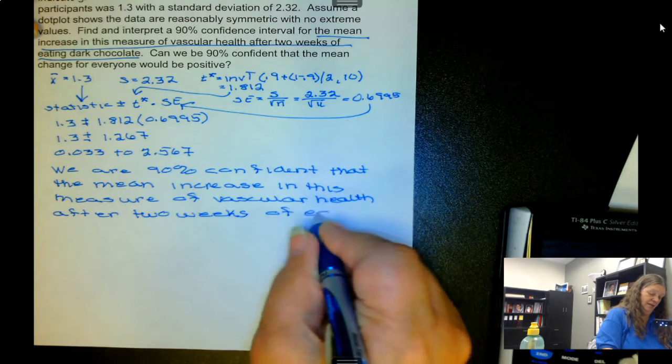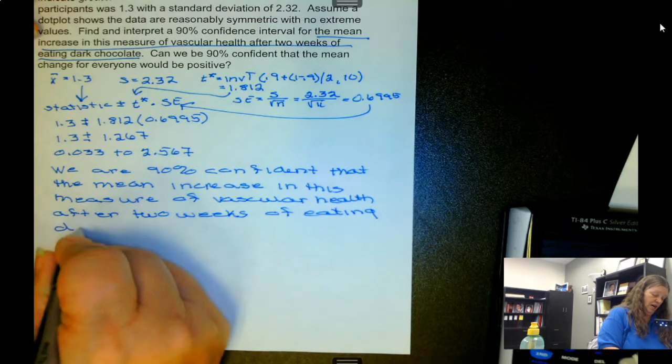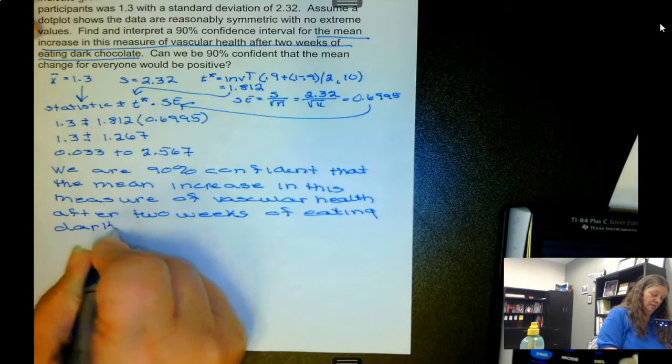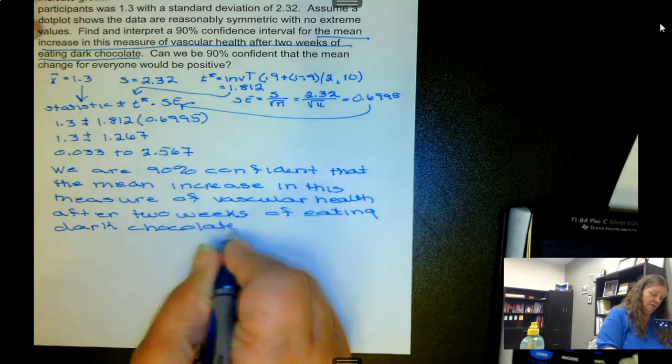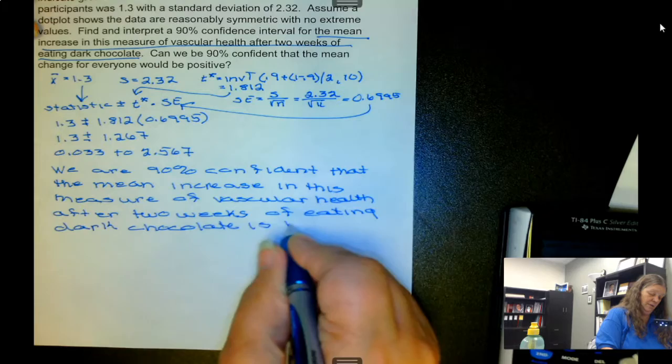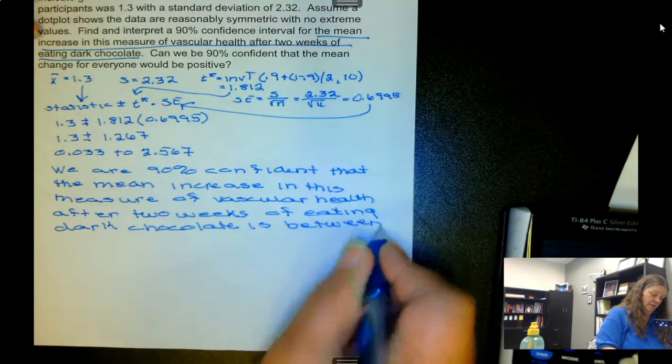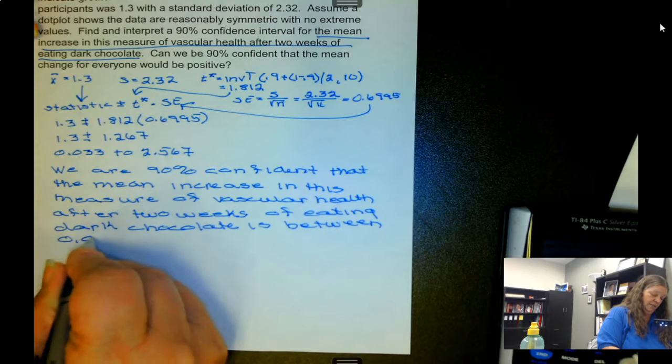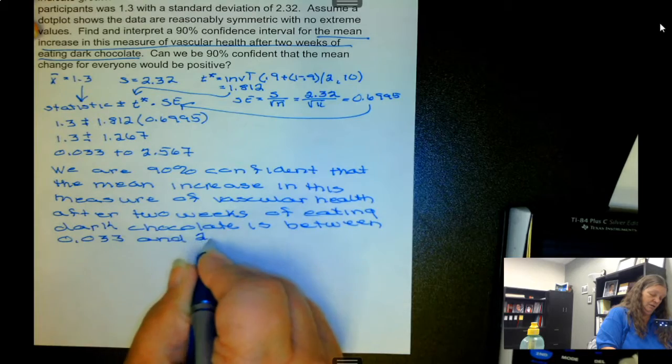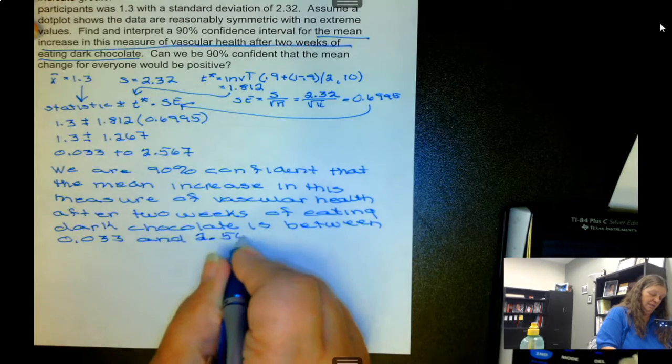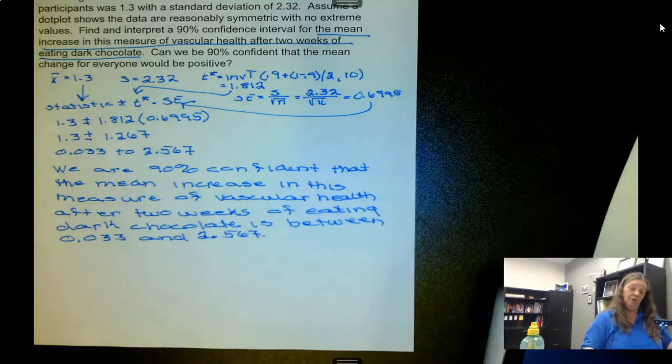after 2 weeks of eating dark chocolate is between 0.033 and 2.567.